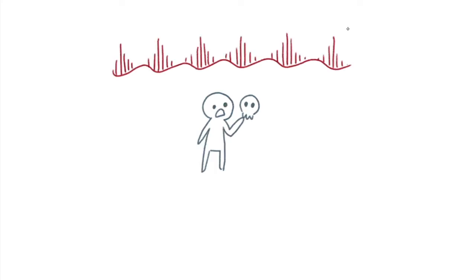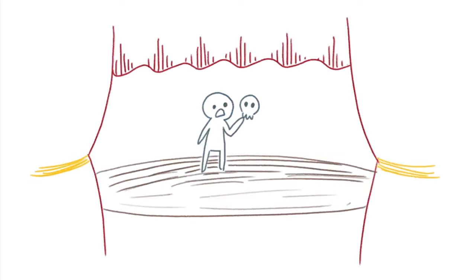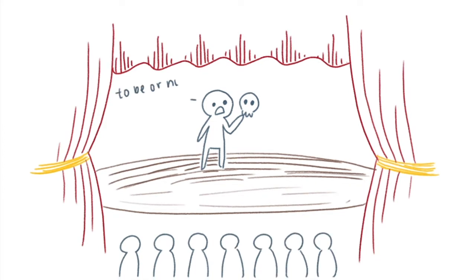Hamlet has been having delusions, hallucinations, anhedonia, lack of motivation, and poor speech. He sees his father's ghost and all of Denmark thinks he's crazy. But what is actually happening?